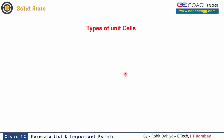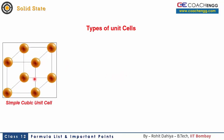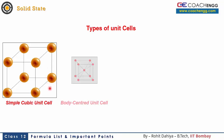Now we are talking about unit cells. In crystal systems, how can the atoms be arranged? The first type — simple cubic unit cell — is called the primitive unit cell. This type of arrangement is known as simple cubic unit cell.